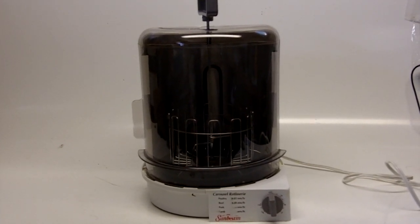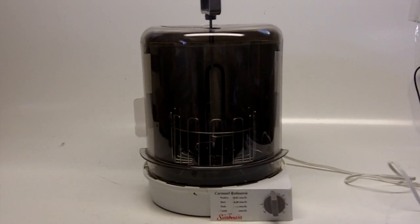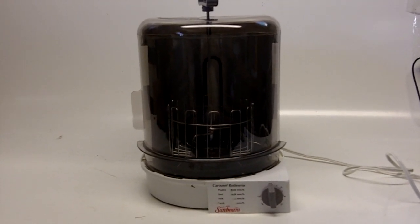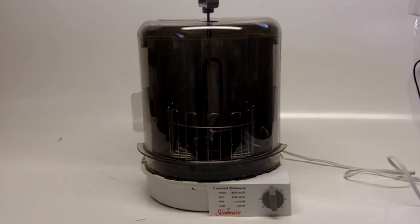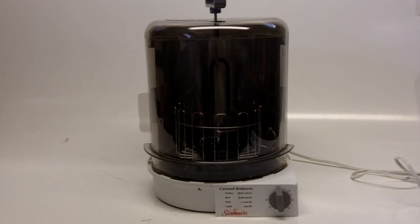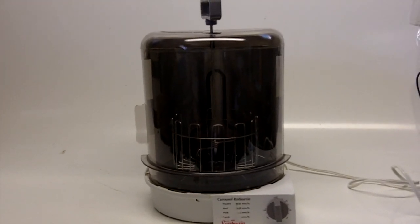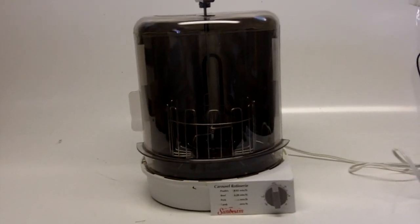You are looking at a Sunbeam carousel rotisserie, which is a wonderful way to cook chickens, beef roasts, pork roasts, leg of lamb, rack of lamb, that sort of thing. You come home, basically take a whole chicken, pop it in the rotisserie.